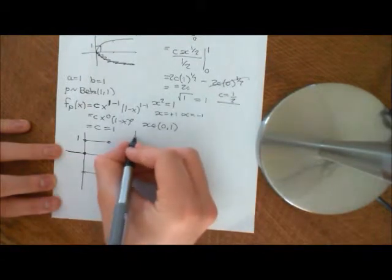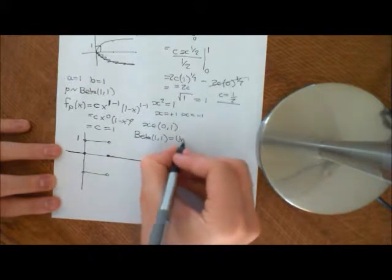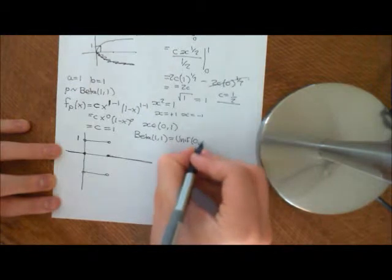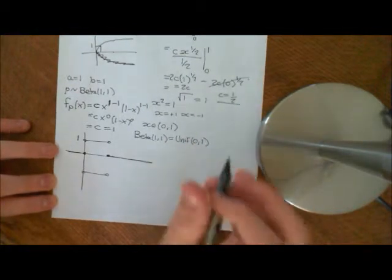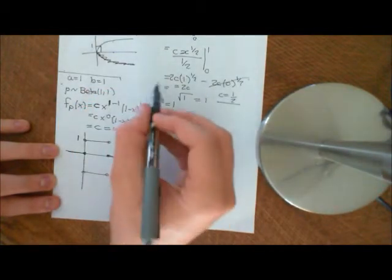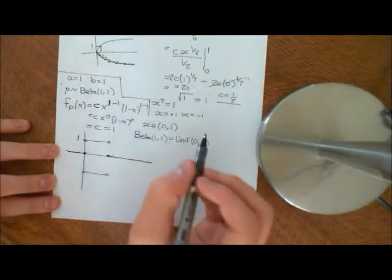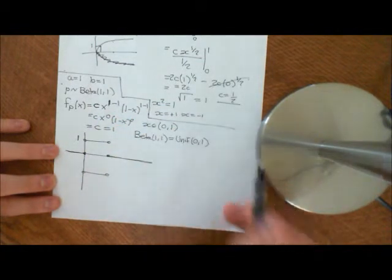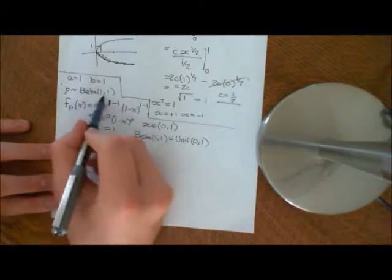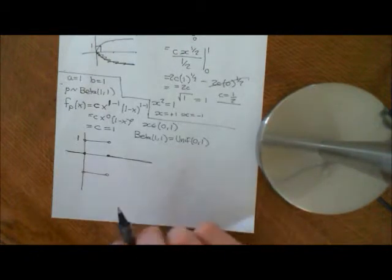So we see that Beta(1,1) is in fact the uniform distribution — equal to the uniform distribution on the interval (0,1). That's exactly what I meant when I said that the beta distribution was in some sense a generalisation of the uniform distribution: if you take Beta(1,1), a specific example of the family of beta distributions, then you get the uniform distribution on 0 to 1.